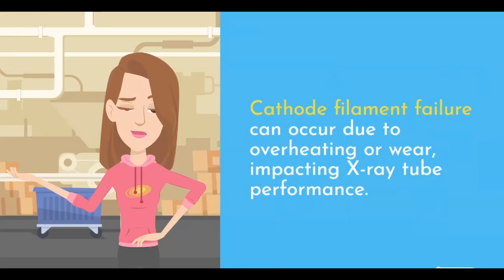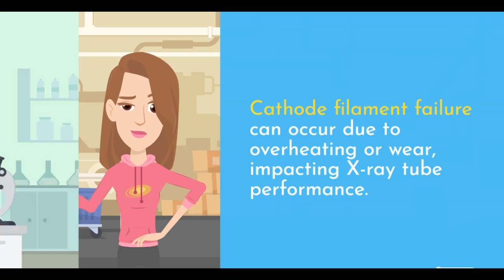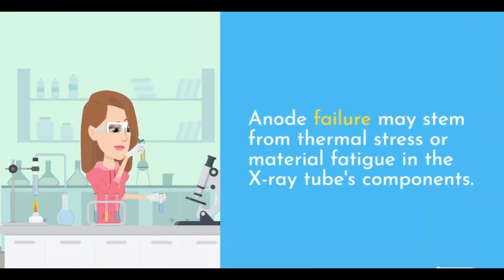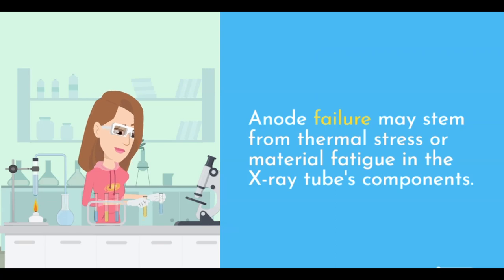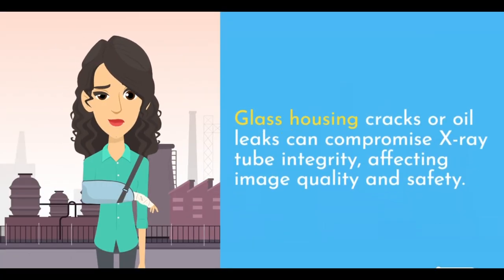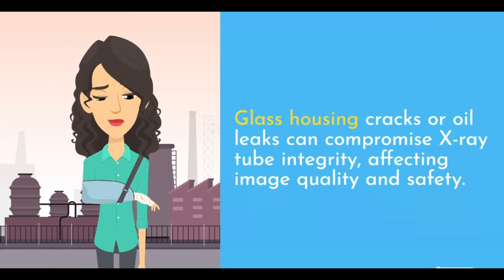Anode filament failure can occur due to overheating or wear, impacting X-ray tube performance. Anode failure may stem from thermal stress or material fatigue in the X-ray tube's components. Glass housing cracks or oil leaks can compromise X-ray tube integrity, affecting image quality and safety.